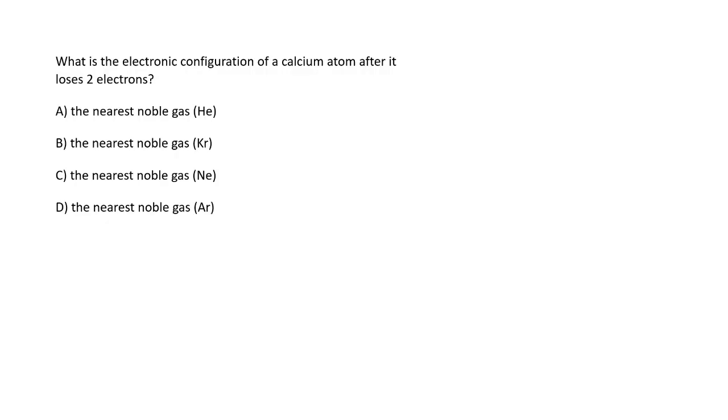Next question: What is the electronic configuration of calcium after it loses two electrons? This type of question is generally asked in exams. Calcium's atomic number is 20. If it loses two electrons, its total number of electrons becomes 18. Option D has the electronic configuration with 18 electrons, so the right option will be option D, the noble gas configuration. It matches with argon.